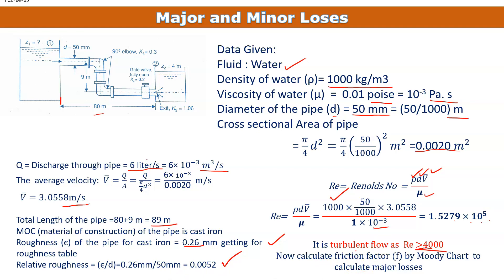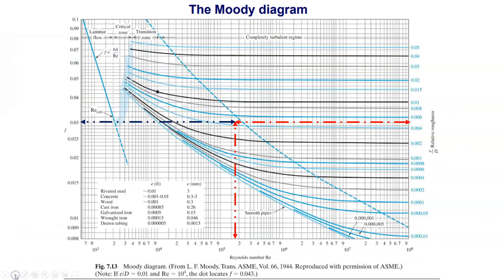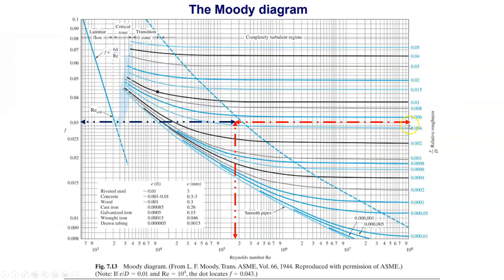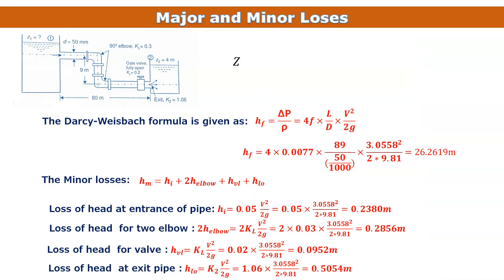From the Moody diagram, using relative roughness ε/D = 0.0052 and Re = 1.529×10⁵, we locate the corresponding curve and point. Reading off the friction factor, we get the Darcy friction factor fd ≈ 0.029. Since the formula uses the Fanning friction factor f = fd/4, we get f = 0.029/4 = 0.0077.